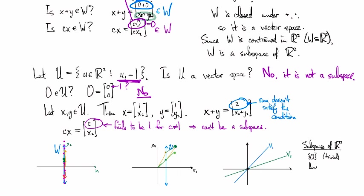Then you can have a line through the origin, like V1 or V2. And then you can have all of R2 itself. That's a vector space, and R2 is contained in R2.